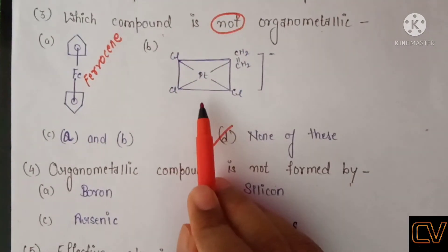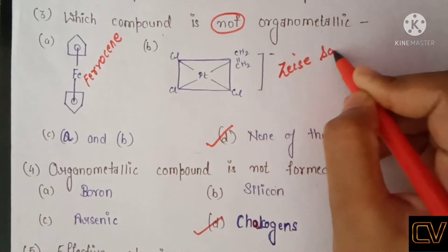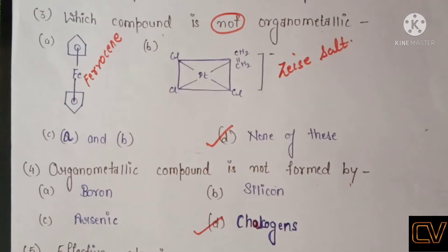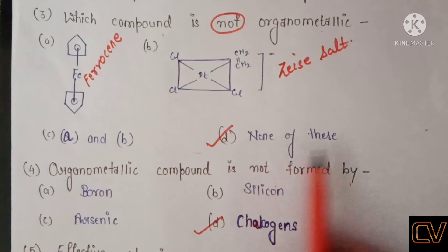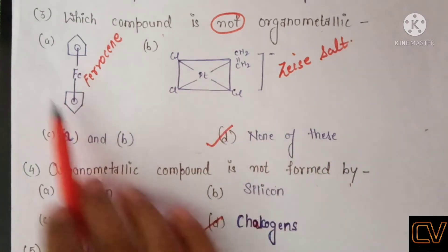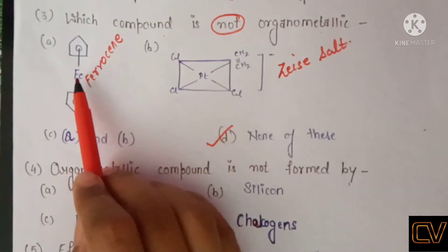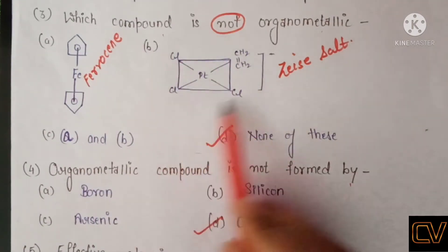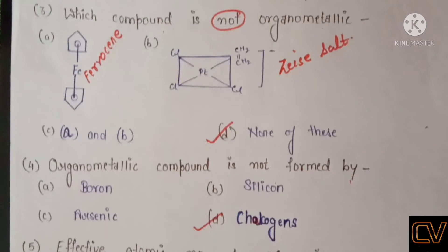The compound in option B is called Zeise's salt, which we will also study in detail in further lectures. Option C is A and B. But the correct answer here is none of these — option D. Why? Because in all the given options you can see that there is a metal present: in one, ferrous metal is with an organic group; in another, platinum is with an organic group. Option C gives both A and B. That's why option D is correct.